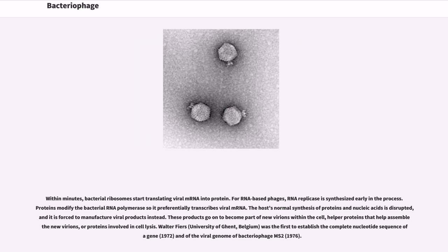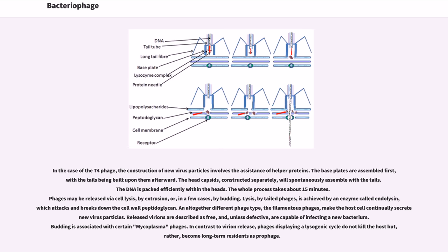In the case of the T4 phage, the construction of new virus particles involves the assistance of helper proteins. The base plates are assembled first, with the tails being built upon them afterward. The head capsids, constructed separately, will spontaneously assemble with the tails. The DNA is packed efficiently within the heads. The whole process takes about 15 minutes. Phages may be released by cell lysis, by extrusion, or in a few cases by budding. Lysis by tailed phages is achieved by an enzyme called endolysin, which attacks and breaks down the cell wall peptidoglycan.